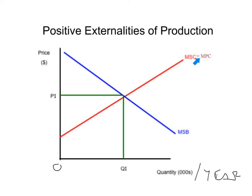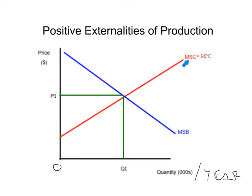For positive externalities of production, the production of something creates positive externalities for society — the cost is going to be lower to society than to the private firm. The marginal social cost, which is what happens outside of the private production of a good, is going to be lower. That means the marginal social cost curve should actually come down, while the marginal private cost, which is the original supply curve, is going to stay put.